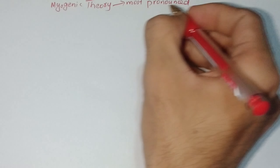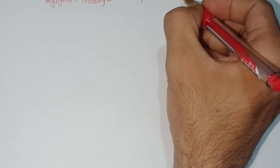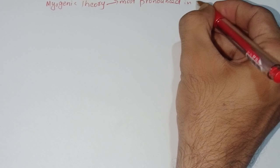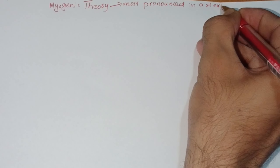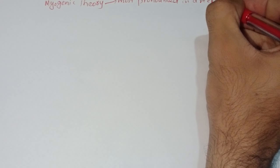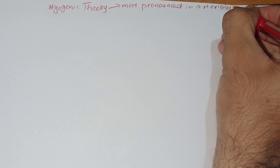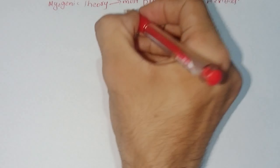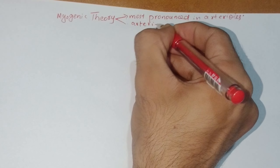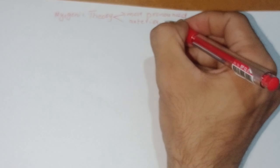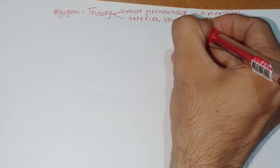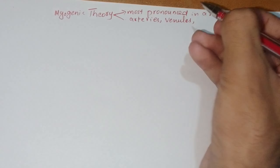Myogenic theory is most pronounced in arterioles, but also seen in arteries, venules, veins, and lymphatic vessels.